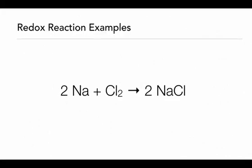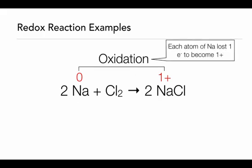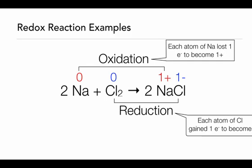In this reaction, we have sodium and chlorine reacting to form sodium chloride. The oxidation state of sodium on the reactant side is zero, because it hasn't combined with anything yet. On the product side, it's one plus — this is the oxidation part, as sodium has lost one electron. The chlorine also starts at zero on the reactant side, but on the product side its oxidation state is negative one. This is a reduction because each chlorine has gained one electron to form the negative one charge. Overall, this is a redox reaction.